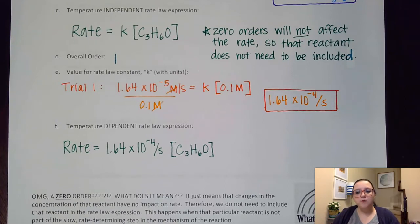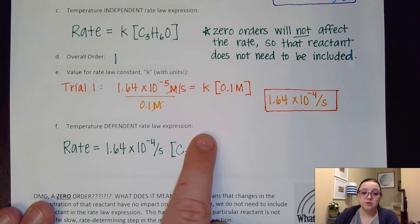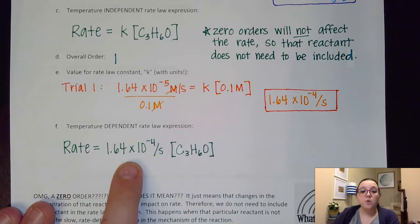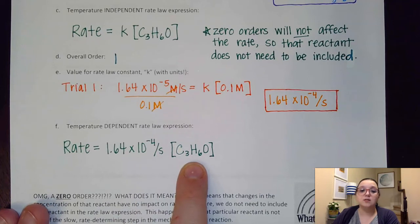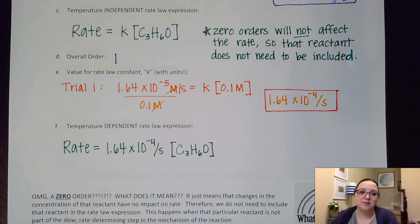The reason why the molarity is not involved is if you think about the formula for K that we talked about in the previous video, it would be molarity raised to the negative overall order minus 1. And so since the overall order is 1, 1 minus 1 just ends up being 0. And so that's why it doesn't get included. So then our temperature dependent rate law expression would simply be that rate equals 1.64 times 10 to the negative fourth. You could put per seconds or seconds to the negative first. And then our C3H6O raised to an order of 1, which I don't have to write because it's understood.